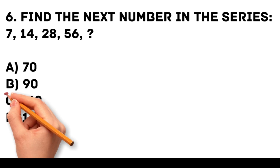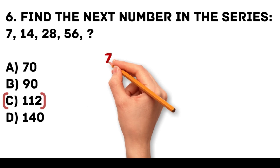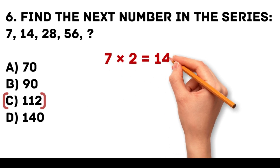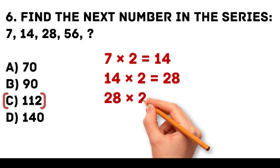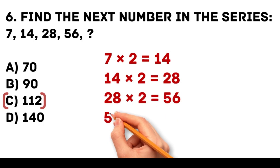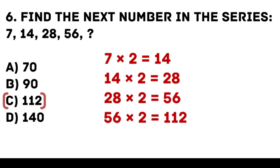Answer: C. 112. Each number in the series is multiplied by 2. 7 times 2 is equal to 14. 14 times 2 is equal to 28. 28 times 2 is equal to 56. 56 times 2 is equal to 112.